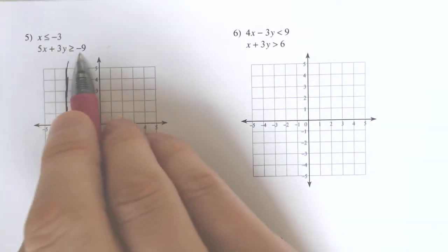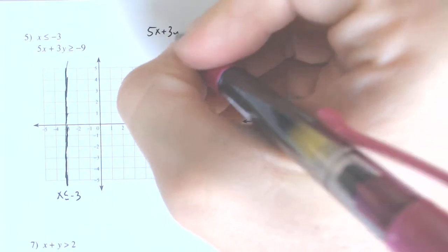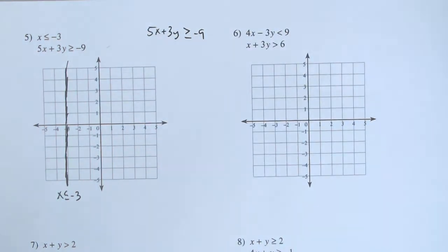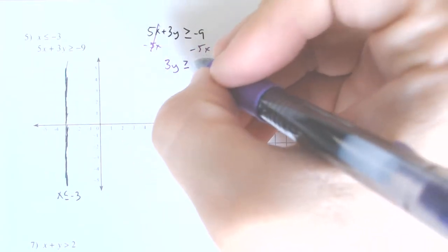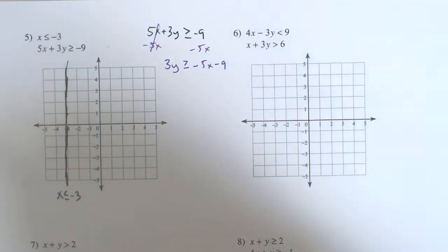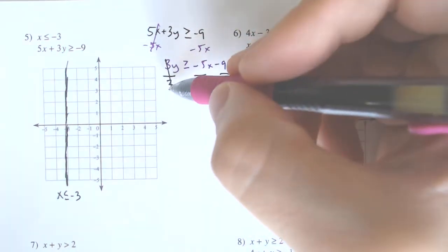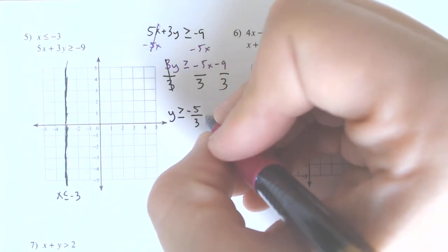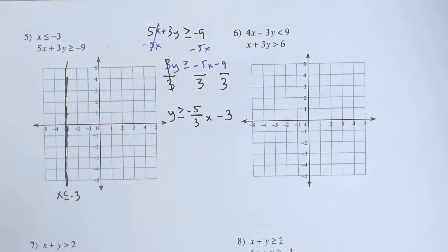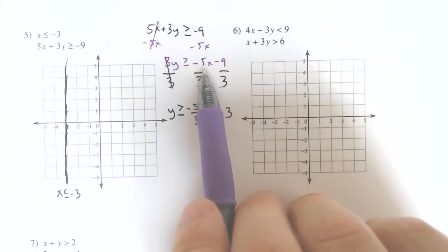This other equation is going to be a little more annoying because it's not solved for y. We have to take 5x plus 3y is greater than or equal to negative 9 and solve for y. Subtract the 5x over to get the y by itself: 3y greater than or equal to negative 5x minus 9. Then divide by 3 — and remember, if you divide by a negative number, we would have to flip the inequality sign. We're dividing by positive 3, so we're not going to flip it. We get y greater than or equal to negative 5 over 3 times x minus 3, because 9 divided by 3 is 3. We didn't combine the 5x or the 9 because they are not like terms.